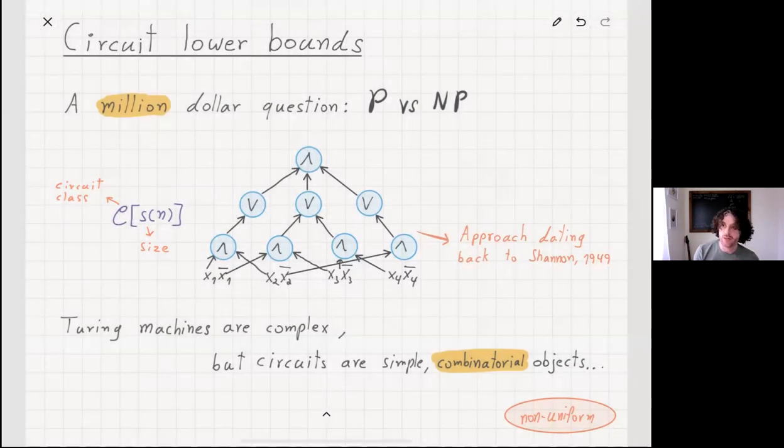The big idea here is that while Turing machines and algorithms are abstract, complex things to analyze, circuits are simple combinatorial objects, and in some sense we can just think about them as labeled graphs.